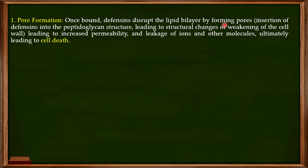The defensins insert themselves into the peptidoglycan structure, leading to structural changes and weakening of the cell wall. Once the cell wall is damaged or weakened, there is increased permeability and leakage of ions and other molecules from the cell, ultimately leading to cell death. So defensins are responsible for the formation of these pores, which increase permeability and cause cell death of the pathogen.